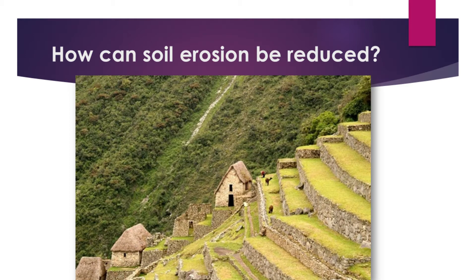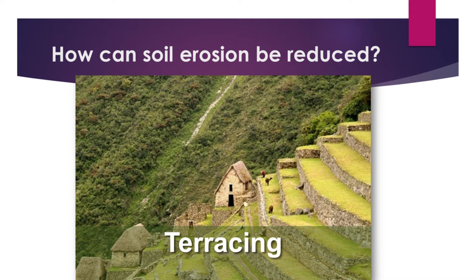Another method is similar to contour farming, but here we use different materials to build an embankment to protect the soil and prevent it from being washed away. That method is called terracing — we build terraces along the side of the slope so that if any soil is removed, it is not washed too far down.